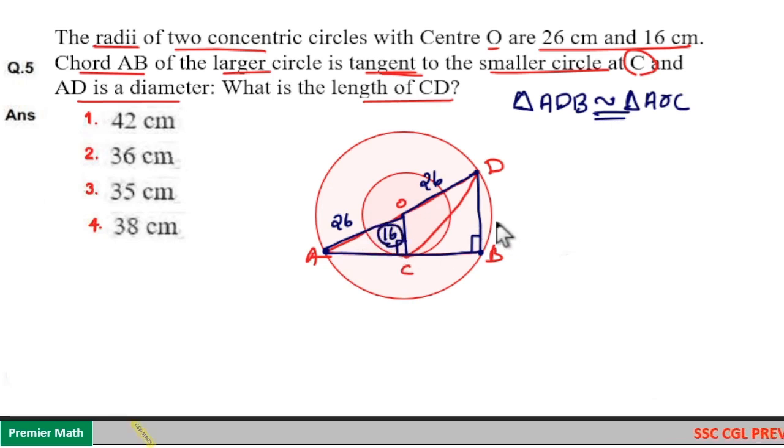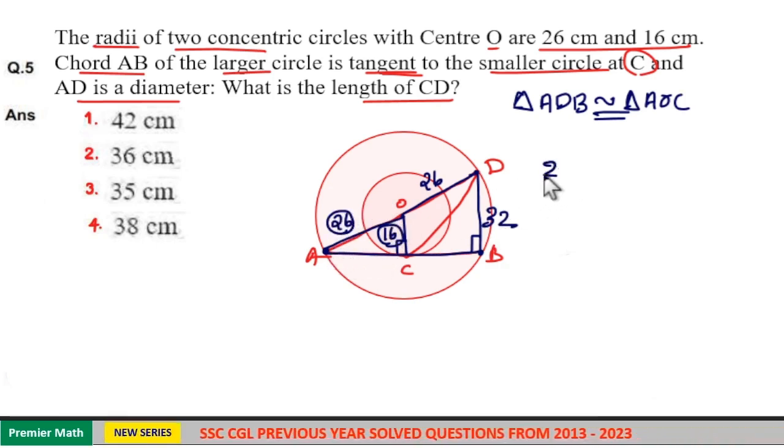Which means, if this is 16, this should be 32 - 16 into 2, 32. Because here, this is 26. That is, hypotenuse of smaller triangle is 26. Hypotenuse of larger triangle is 26 into 2, 52. So this is in the ratio 1 is to 2.